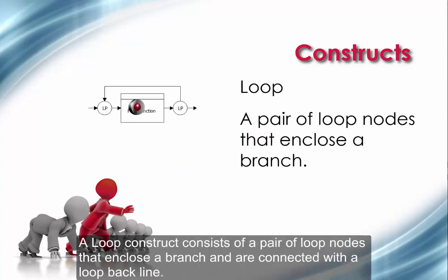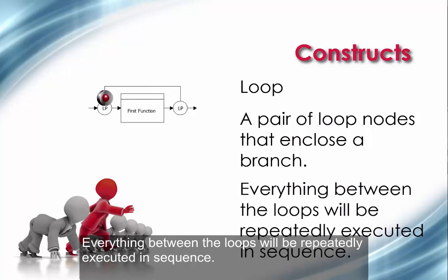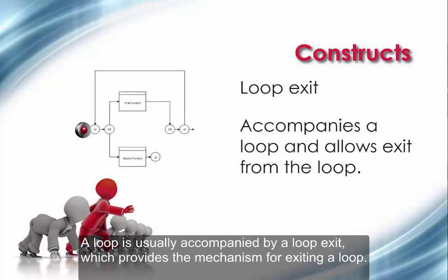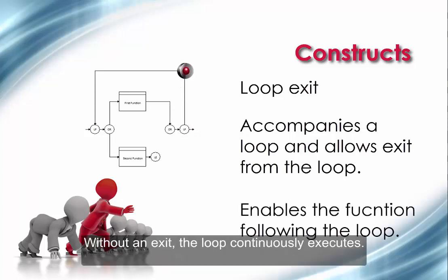A loop construct consists of a pair of loop nodes that enclose a branch and are connected with a loop backline. Everything between the loops will be repeatedly executed in sequence. A loop is usually accompanied by a loop exit, which provides the mechanism for exiting a loop. Without an exit, the loop continuously executes.